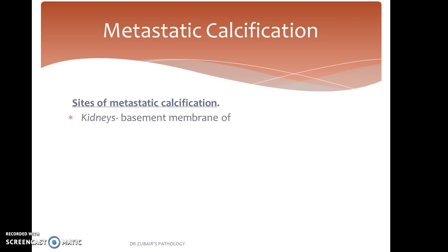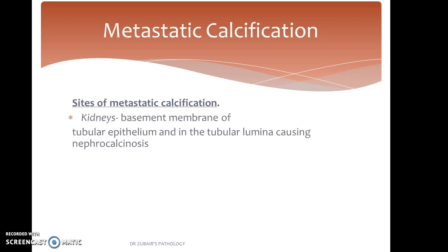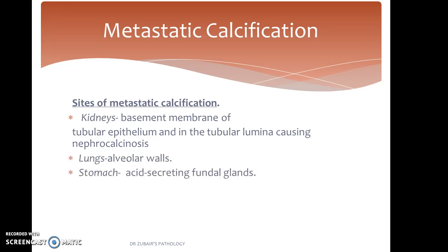The sites of metastatic calcification include: the kidney, in the basement membrane of tubular epithelium and in the tubular lumina, causing nephrocalcinosis; the alveolar walls of the lungs; the acid-secreting fundal glands of the stomach; the internal elastic lamina of blood vessels; and the cornea.